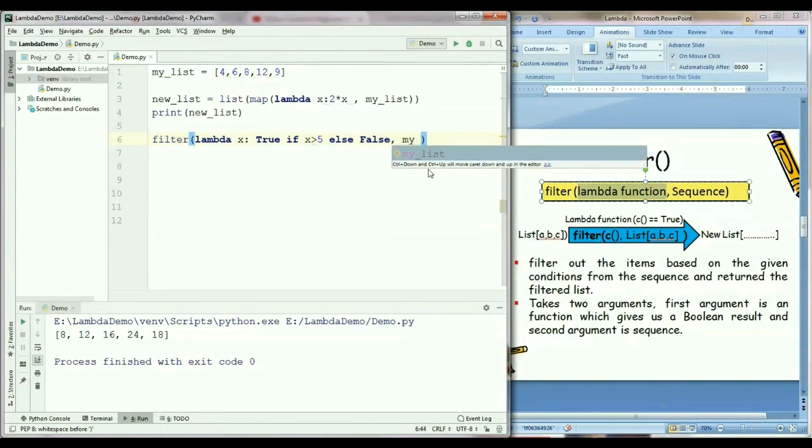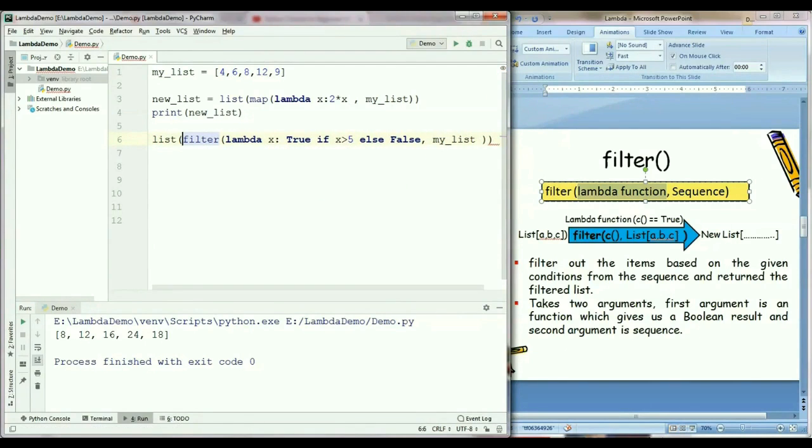And the second argument which we need to pass here is list name which is my list. Now we want to put output in the list format. So just typecast filter function output into a list format and assign it to another variable, for example new list 1. And then just print the new list 1.